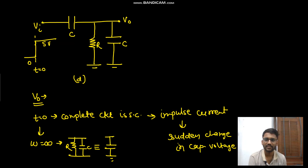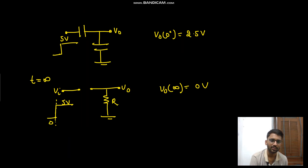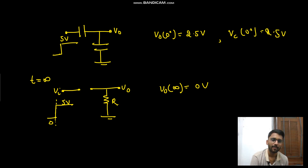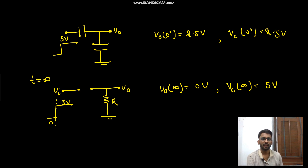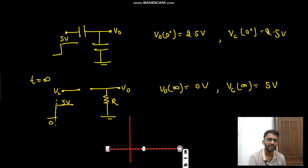Similarly we can talk about vc1. At t goes to zero, your v_naught and vc1 equals to 2.5 volt only. And vc1 at t goes to infinity is 5 volt.